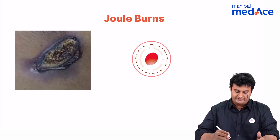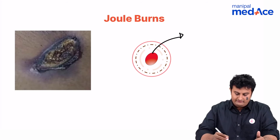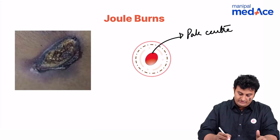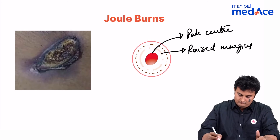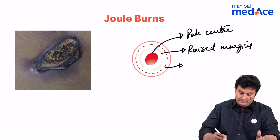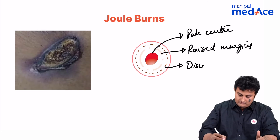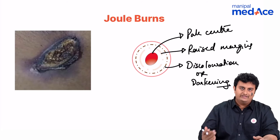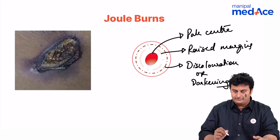I have given a diagrammatic representation. On the inside, you have a pale center, surrounded by raised margins. Then you are going to have discoloration or darkening. Why is this happening? Because the keratin is getting boiled — it is getting heated up — and that is why you are going to have this sort of discoloration.